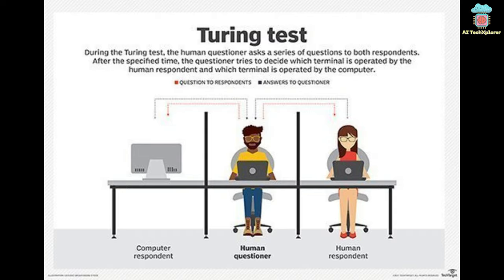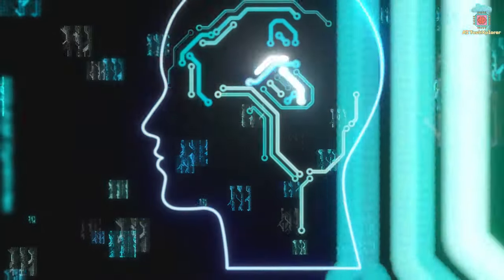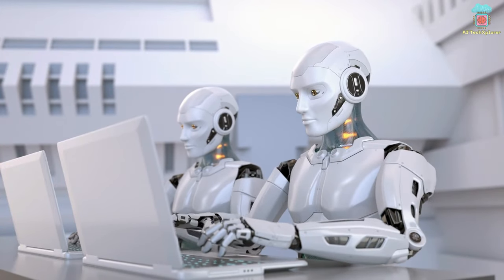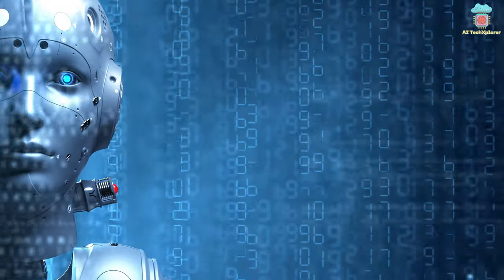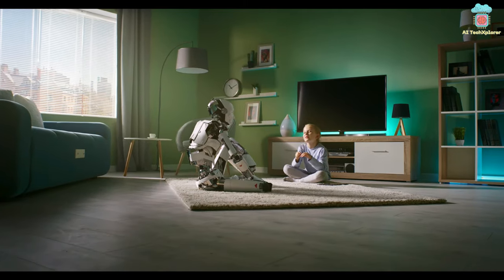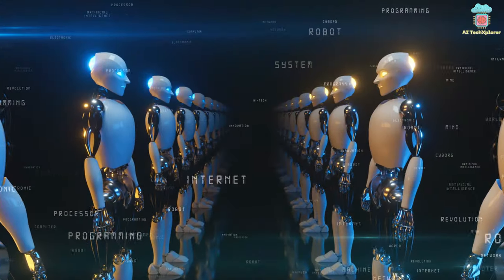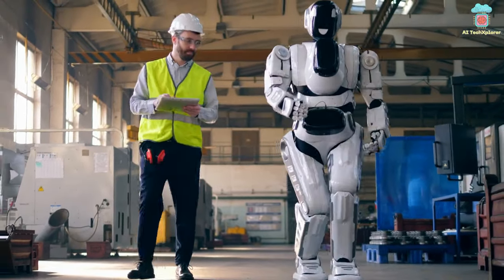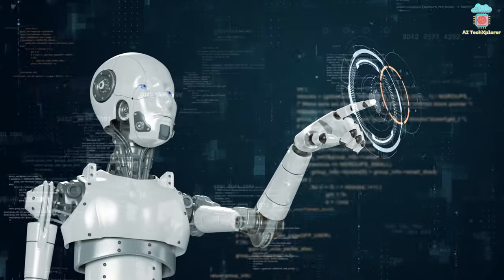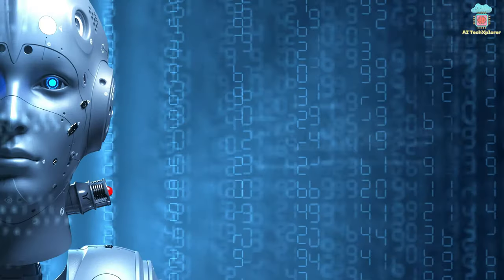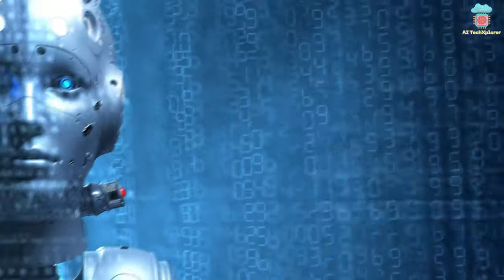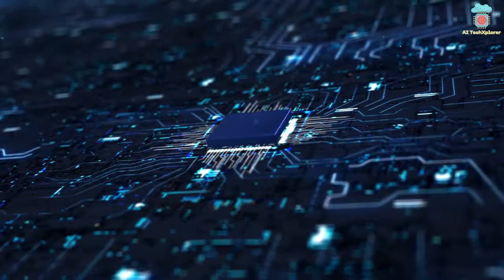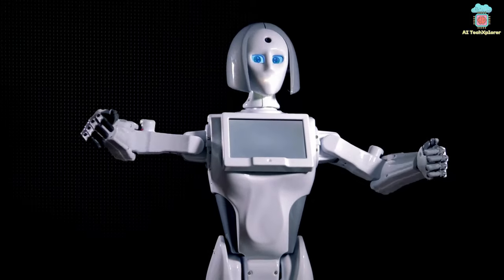The Turing Test only tests a machine's ability to imitate human conversation, while the Robot College Student Test requires a machine to learn and understand complex material, reason about it, and communicate its understanding to others. The test requires robots to have a wide range of cognitive abilities, including the ability to reason about learned material, apply it to new problems, and communicate their understanding concisely.